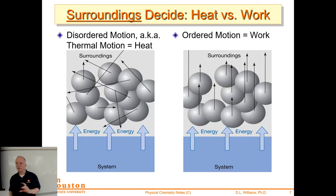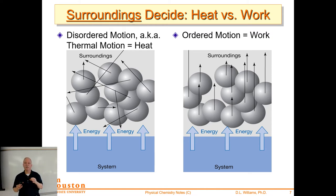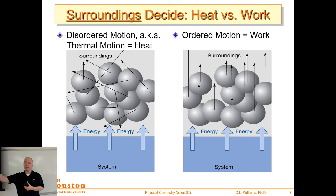The surroundings decide whether energy leaving a system is heat or work. Energy can go into random motion — just heating up the surroundings — or into ordered motion where the surroundings move in a particular direction. Most of the time that's expansion of a gas or moving a piston, which is just a movable wall. Ordered motion equals work and random motion equals heat.